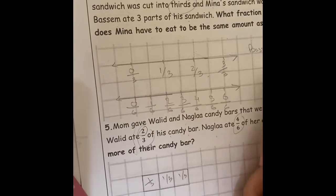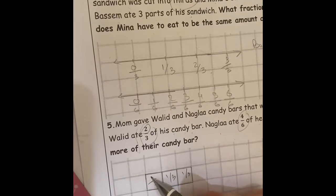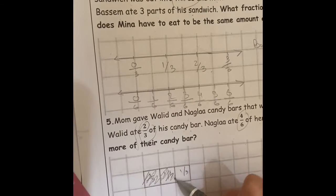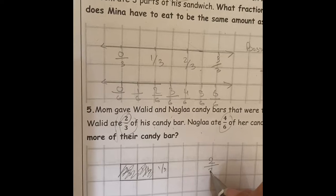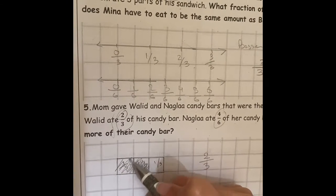And he ate 2 over 3 of his candy bar. Here I'm going to shade 2 parts. The fraction of his candy bar is 2 over 3.